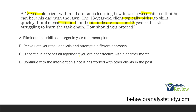You don't have to jump all the way back, conduct another FBA, and start all over again. Maybe it's just the steps in the task chain or how you're teaching it. B looks pretty good. C: discontinue services altogether if you're not effective within another month — well, this is just one skill, and one skill isn't going to make or break your treatment. D: continue with the intervention since it has worked with other clients in the past. Don't fall for that trap. Everything we do is individualized — we never plagiarize even our own treatment. The answer is B: reevaluate your task analysis and attempt a different approach.